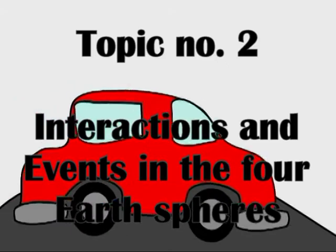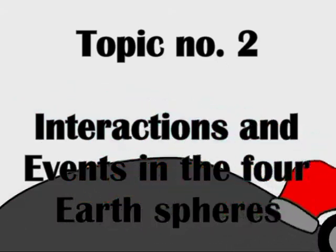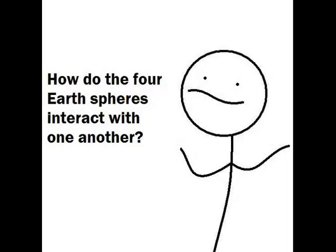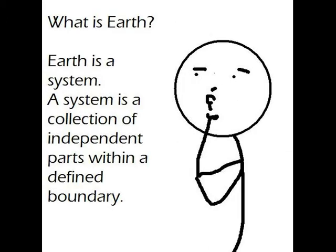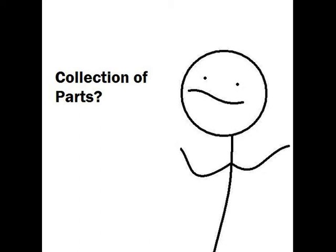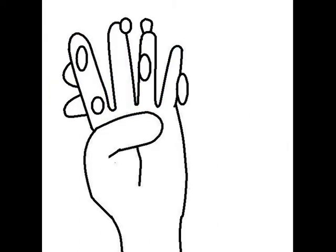The second topic we're going to be discussing is the interactions between each of these spheres. But first, we have to understand what Earth is. Earth is a system. A system is a collection of independent parts within a defined boundary — all of the four spheres and their subspheres, and all of the other bits within the subspheres.